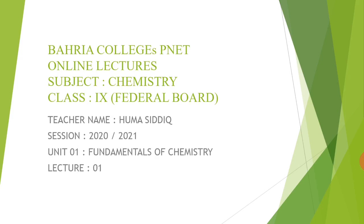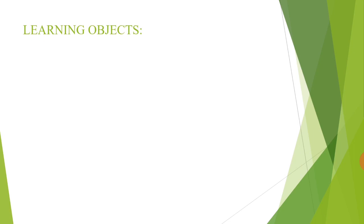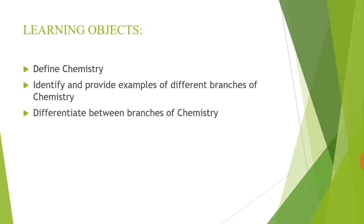Class 9 Federal Board online class, subject is Chemistry. Today we will start the first chapter: Fundamentals of Chemistry. The topic is Chemistry and its Branches. Learning objectives of this lecture: at the end of this lecture you will be able to define chemistry, identify and provide examples of different branches of chemistry, and differentiate between branches of chemistry.